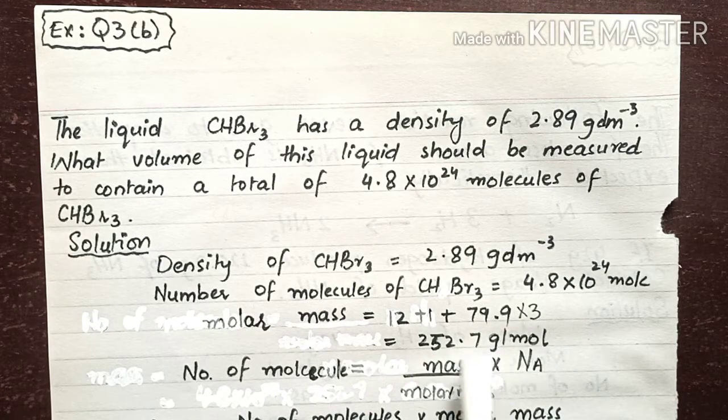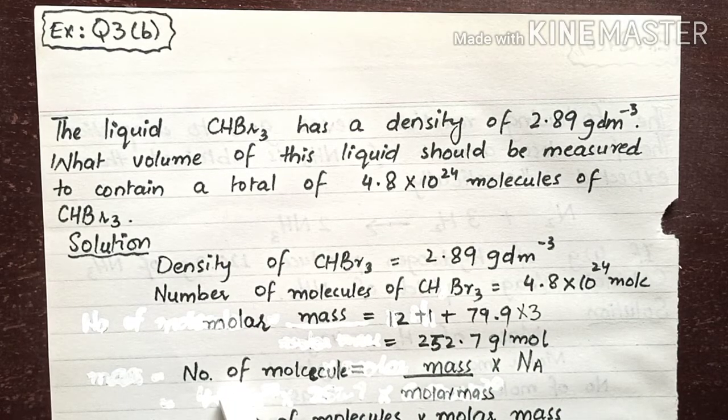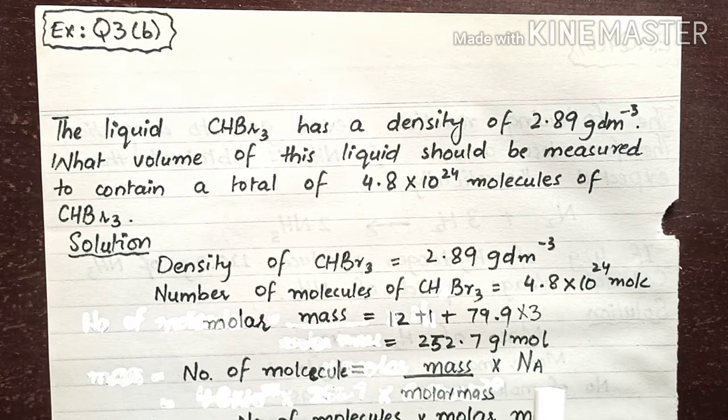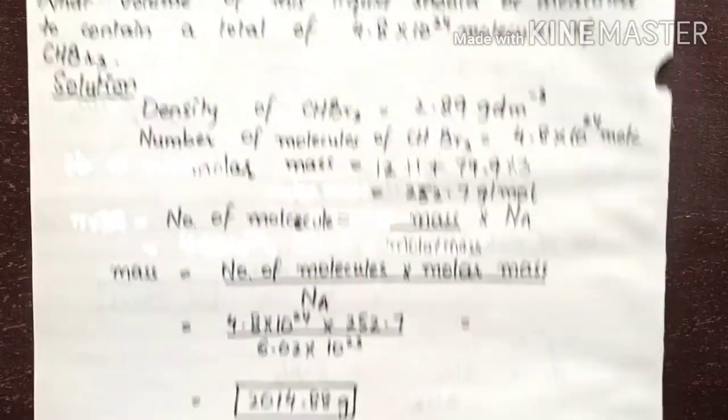The formula for the number of molecules is: number of molecules = (mass / molar mass) × Avogadro's number. We are going to rearrange this formula for calculating the mass.